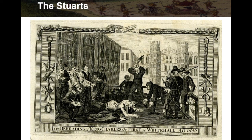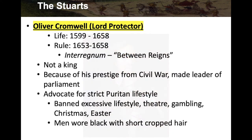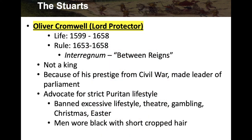There's a picture of the beheading of King Charles I — he's about to have his head cut off, and not too many sympathizers are present. He was not very popular. When Charles I was out of the picture, Oliver Cromwell became what's called Lord Protector — kind of like the Prime Minister without a monarch. He was really the one running the show. His life was 1599 to 1658, and he ruled from 1653 to 1658 — not very long.